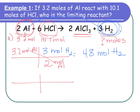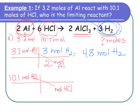Now do the same thing with the 10.1 moles of hydrochloric acid. We get 3 moles of hydrogen for every 6 moles of HCl used. Putting that into the calculator, we find that the HCl can produce 5.05 moles of hydrogen.